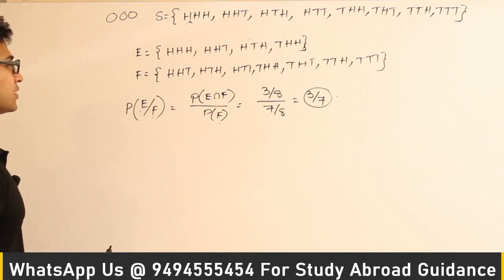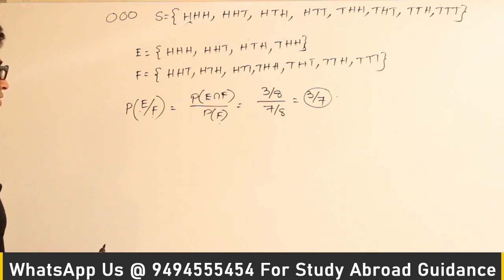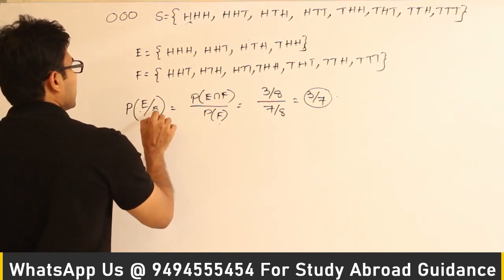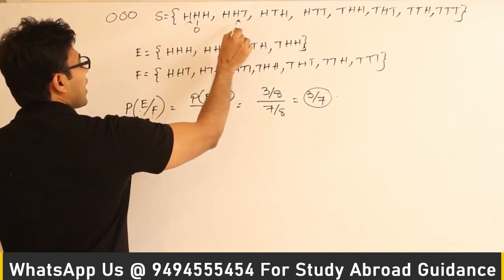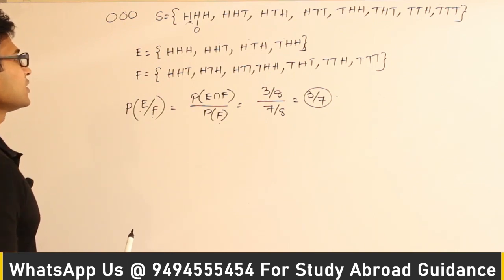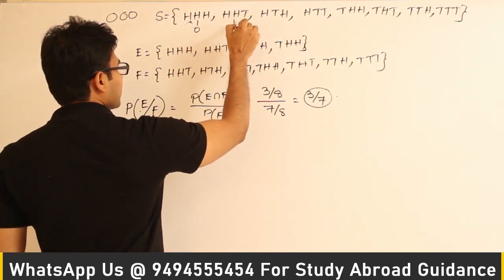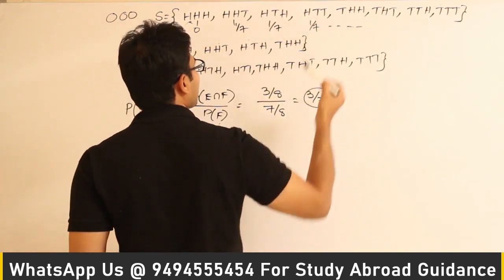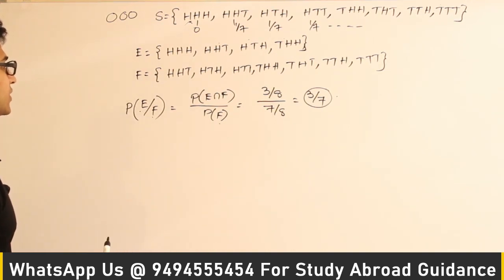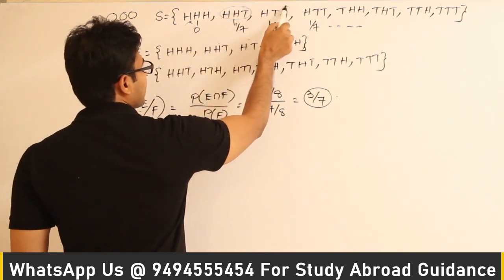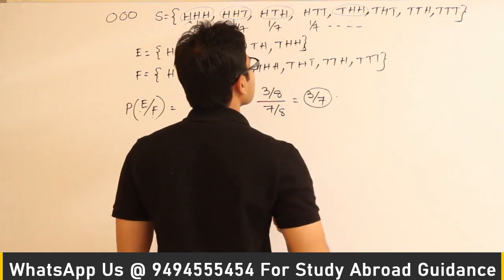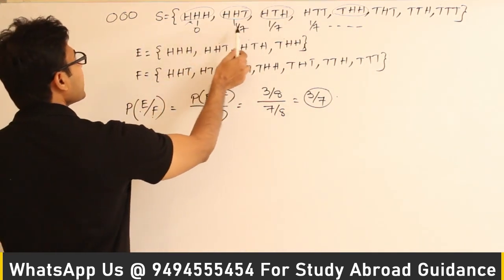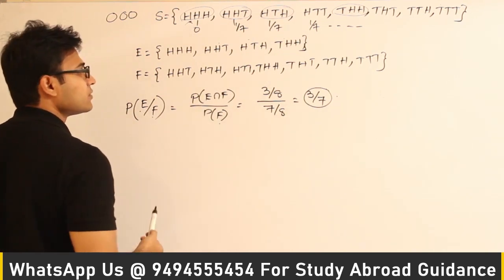Alternatively, using the updated-probability method: since F has occurred, we eliminate all elements without tails, assigning HHH a probability of 0. The remaining 7 elements each get probability 1/7. Among those, the outcomes with at least 2 heads are HHT, HTH, and THH — three outcomes each with probability 1/7, giving P(E|F) = 3/7. Both methods agree.